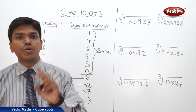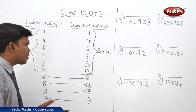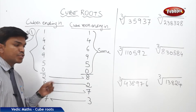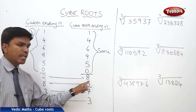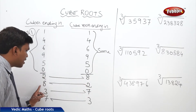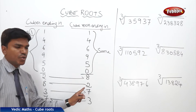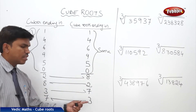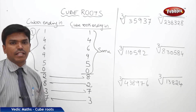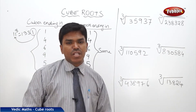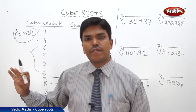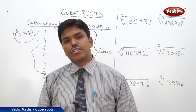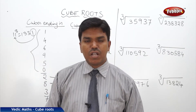But for two digits it will differ. If a cube number is ending in 2, its cube root should end in 8; and if ending in 8, its cube root ends in 2. Similarly, 3 and 7 swap: cube ending in 3 gives cube root ending in 7, and ending in 7 gives 3. If you are very good at this table and know the cubes until 10, it's very easy to calculate cube roots.